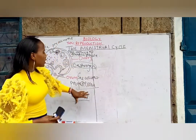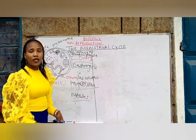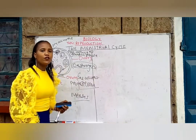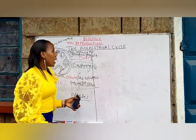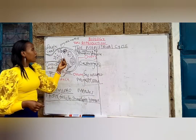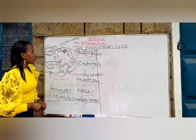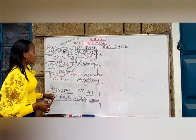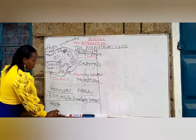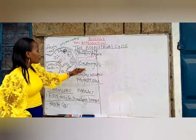Now that we have understood the development of an ovum to the point of ovulation, the menstruation, and the menses, we can embark on the menstrual cycle by looking at the hormones involved. The first hormone we are going to look at is the follicle stimulating hormone (FSH). Its function during the menstrual cycle is to stimulate the formation of follicle cells.